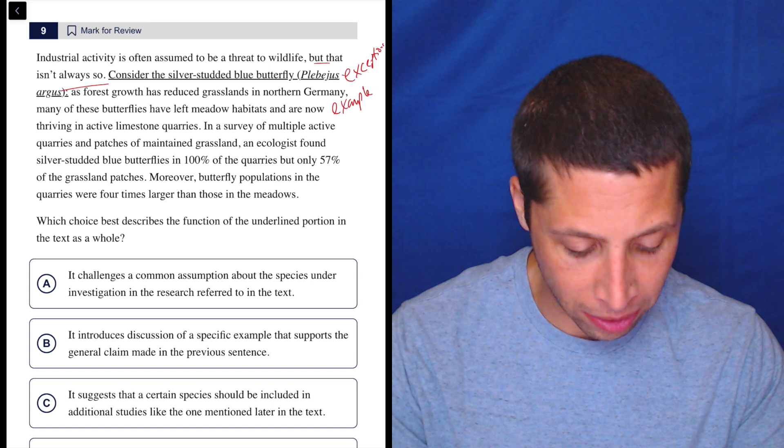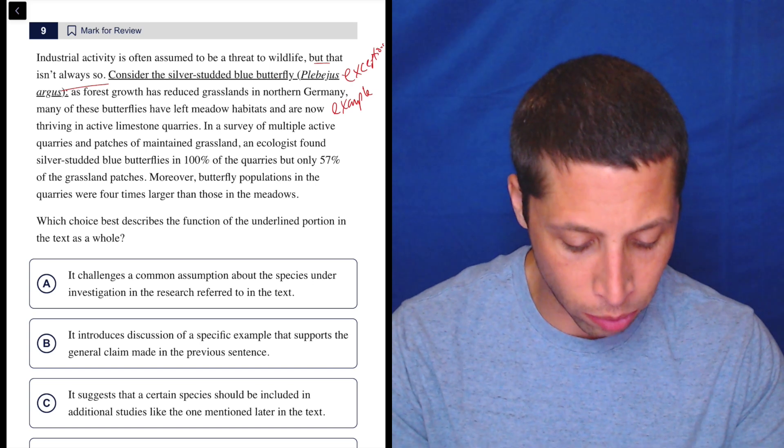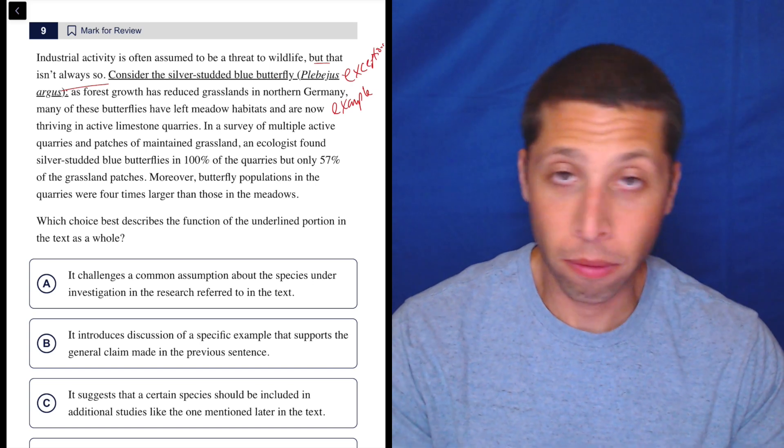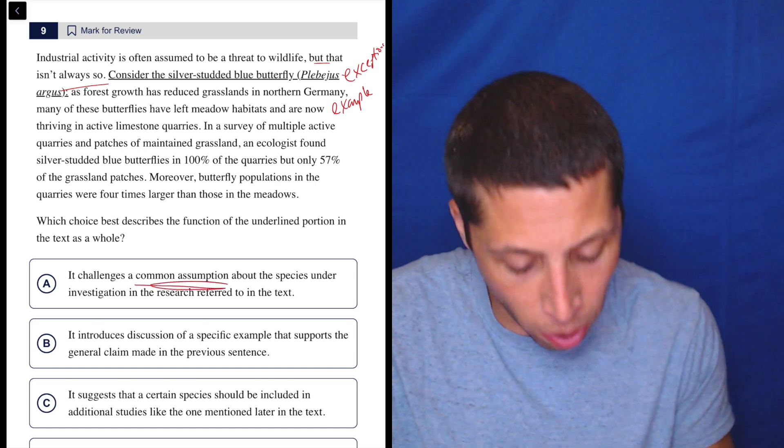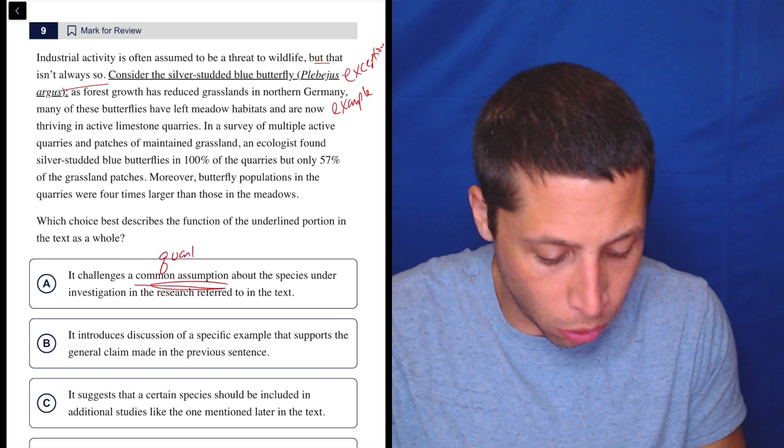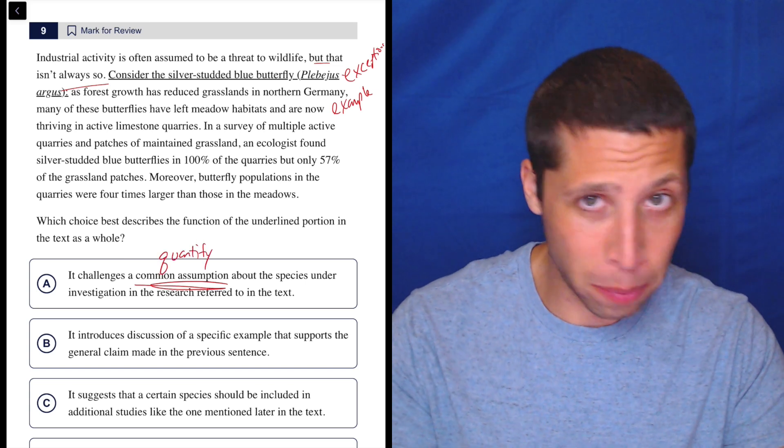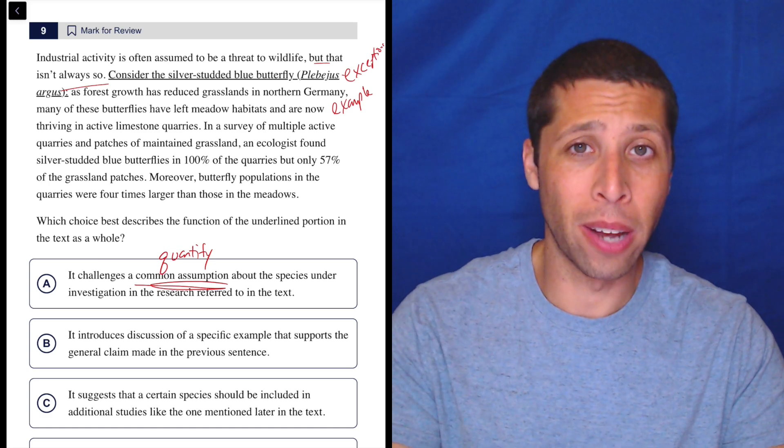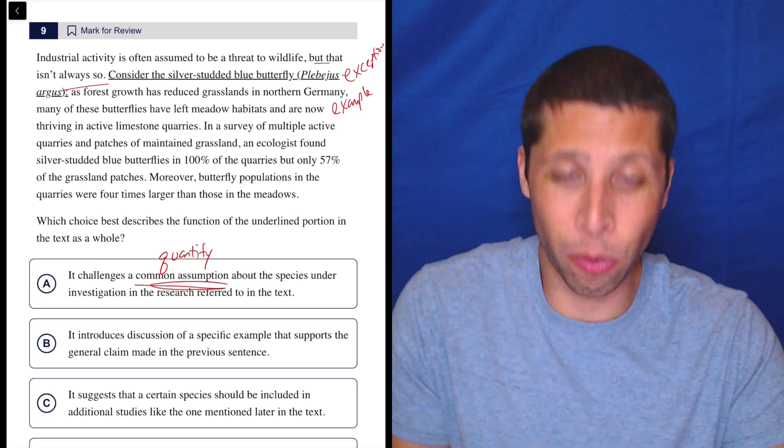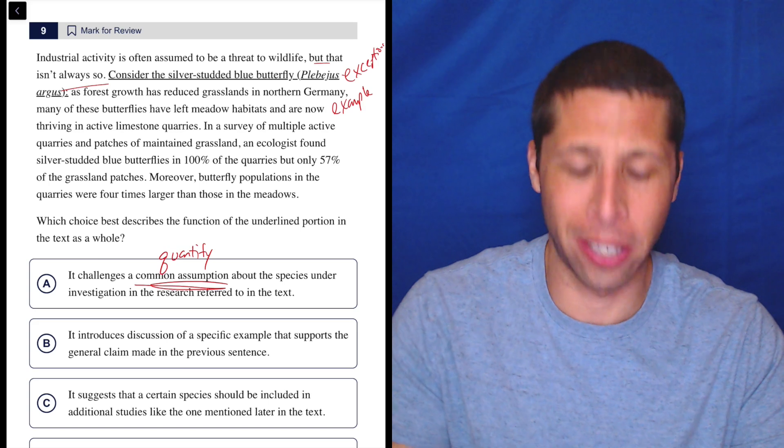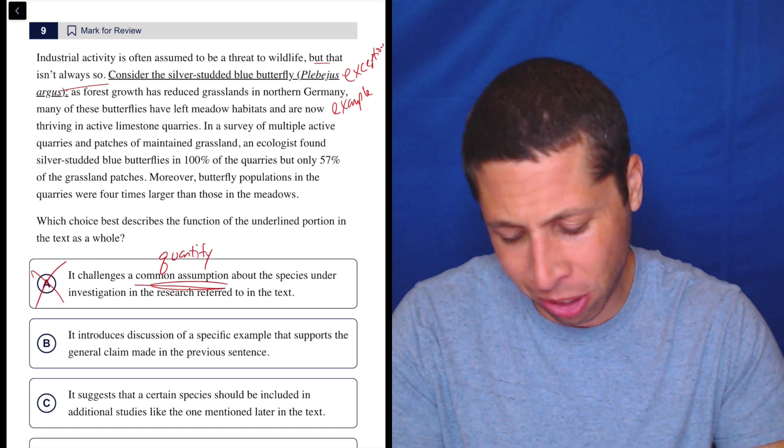A, it challenges a common assumption about the species under investigation in the research referred to in the text. Well, this is a good example of a quantifier in disguise, right? It doesn't use the word most, but a common assumption? Do lots of people have opinions about this weird little butterfly? I don't think so. I certainly had never heard of it until right now.